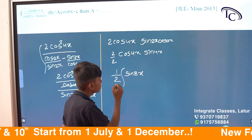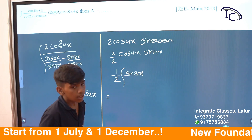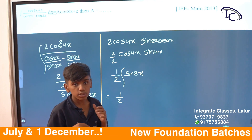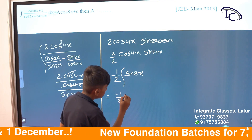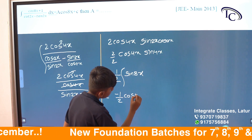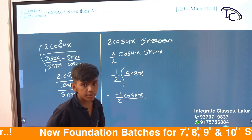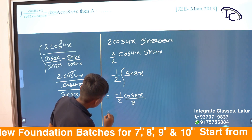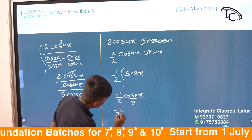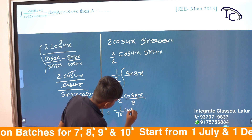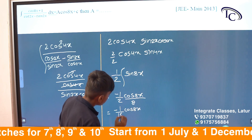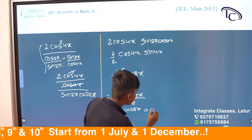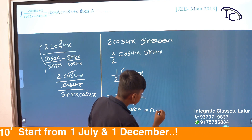Now sending to integration: 1/2 minus 8x, extra constant gives 2 minus 1/16·cos(8x). The final result is minus 1/16·cos(8x) plus a constant C.